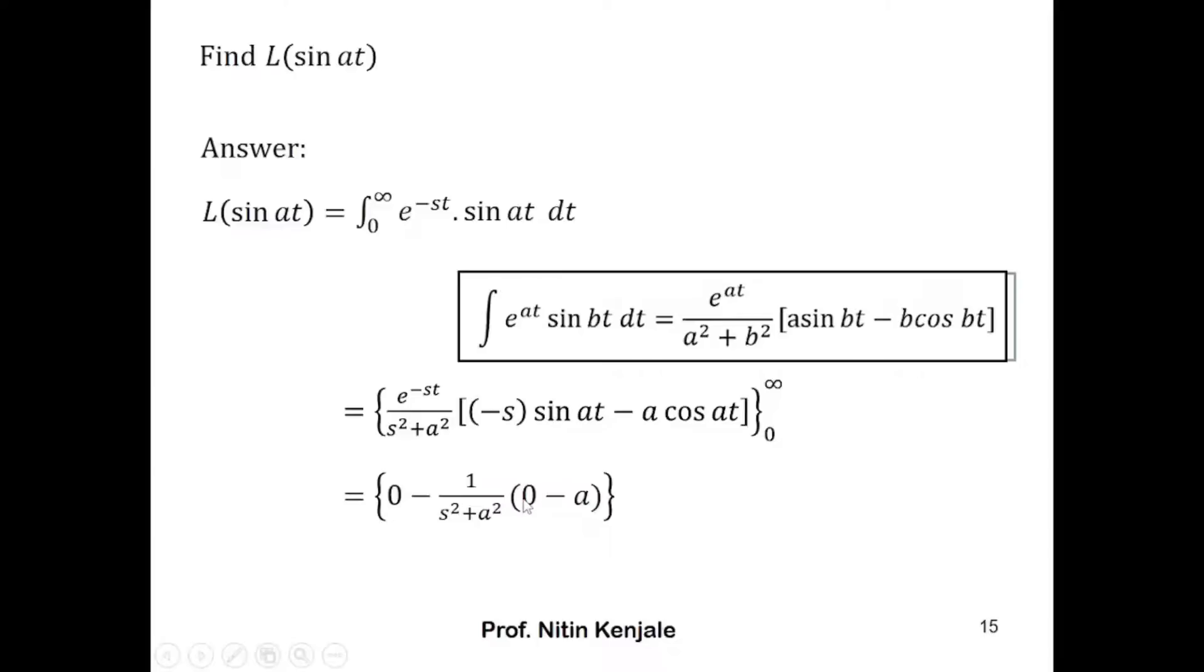Sine zero is zero, zero into minus s is zero. Then cos zero is one, so we have minus a into one. Minus into minus is plus, so simplifying this, we have a upon s squared plus a squared.